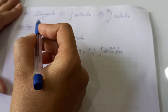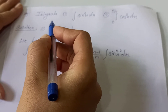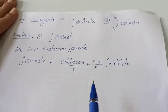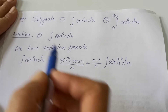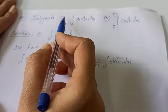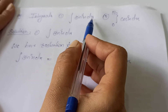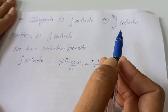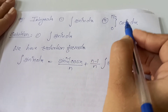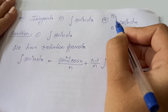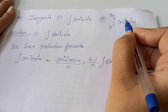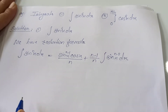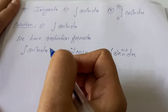Now we will start with the next example based on reduction formulas 1 and 2. The first is to integrate sin raised to 4 of x dx, and the second is to find the value of the integration from 0 to pi by 2 of cos raised to 6 of x dx. Let's solve these one by one.